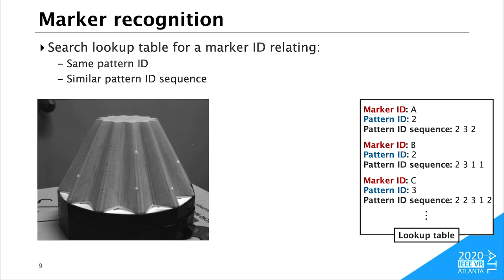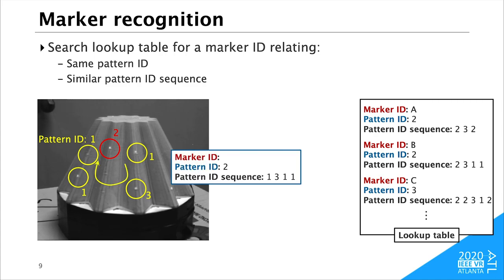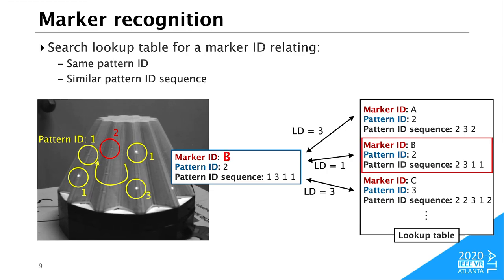We recognize each marker from captured image sequence. First, we measure each pattern ID from the sequence of the infrared light and the sequence of adjacent pattern IDs. Then we search the lookup table for a marker ID that has the same pattern ID and the most similar pattern ID sequence. The similarity of the pattern ID sequence is evaluated by the Levenshtein distance. This particular marker is recognized as marker B.